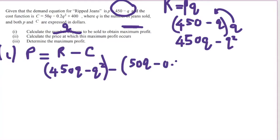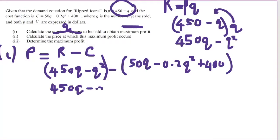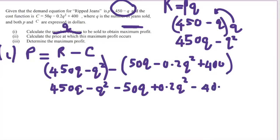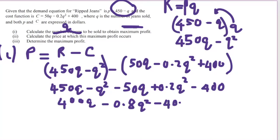We distribute the minus sign because it affects everything behind it. So I have 450Q minus Q squared, and then the signs all change: so we get 450Q minus 50Q, which is 400Q, minus Q squared plus 0.2Q squared, which is negative 0.8Q squared, then minus 400. This is our profit function: π = 400Q minus 0.8Q squared minus 400.